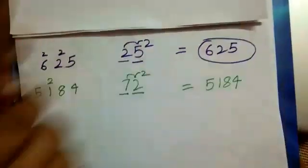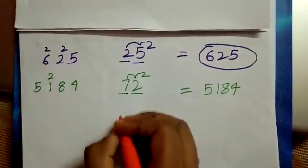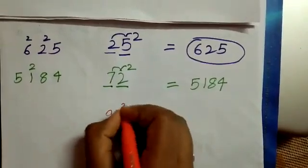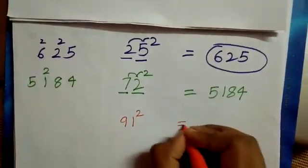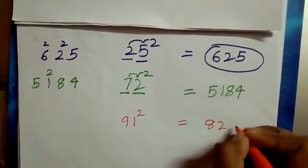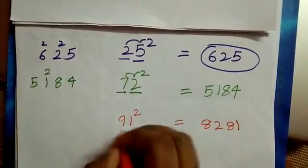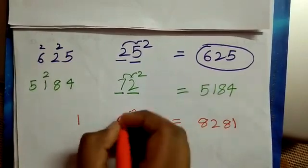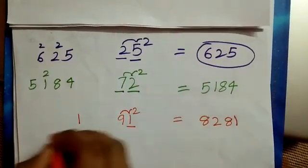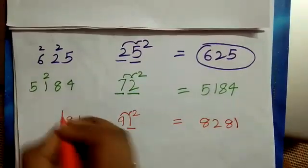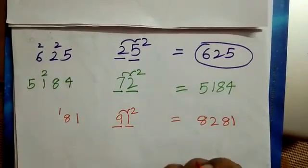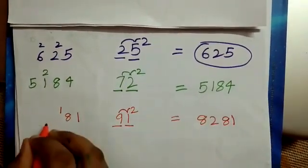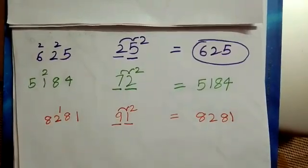The last and final example. 91 square equal to 8281. 1 1's are 1, 2 1's are 2, 2 9's are 18, 1 carry over. 9 9's are 81, 81 plus 1 is equal to 82. That's it, simple.